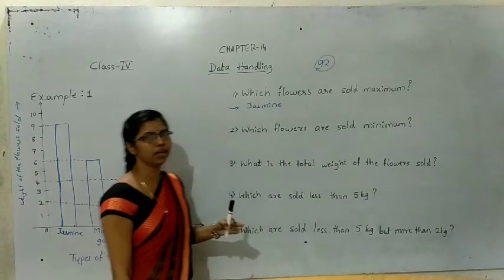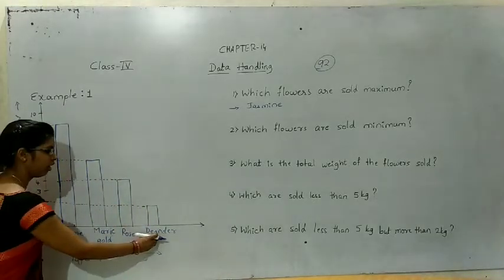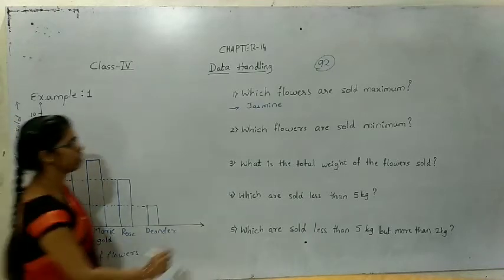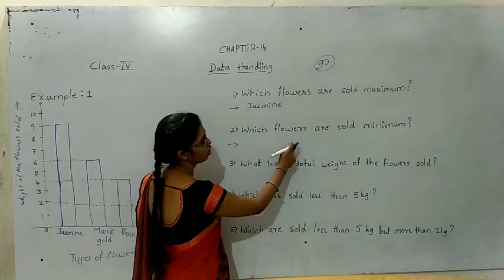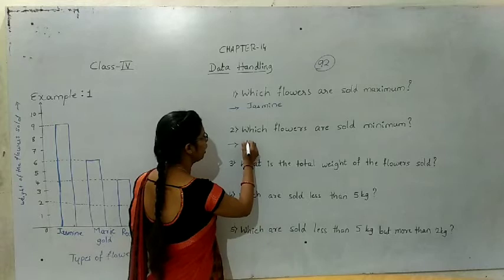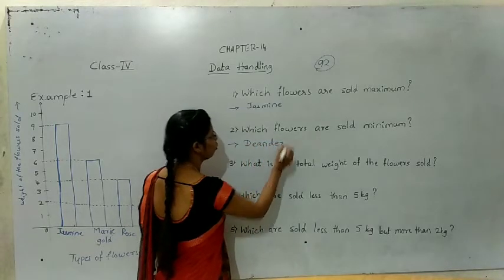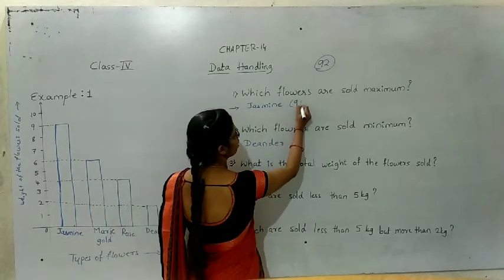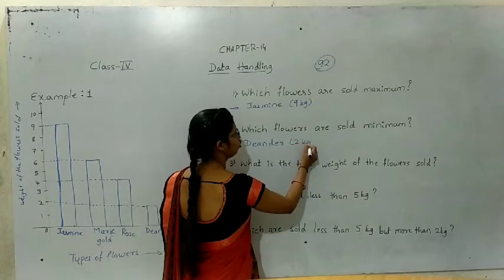Dear students, write in your textbook at page number 95. Which flower is sold maximum? Jasmine is sold maximum. Question two: which flower is sold minimum? Minimum means the least amount — that is deander, 2 kg.